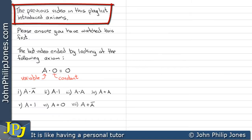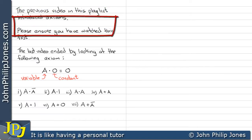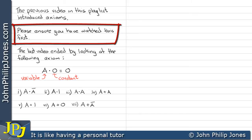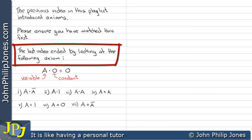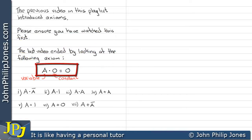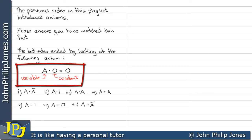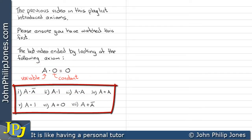The previous video in this playlist introduced axioms. Please ensure you have watched this first before you carry on with this particular video. The last video ended by looking at the following axiom: A AND zero will always give a zero, where A is the variable and zero is the constant, as labeled in red. Following this, you can see there are some examples of axioms and we're going to work on each of these and show what they give.